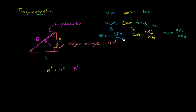You're probably asking, what is all this opposite, hypotenuse, adjacent? Well, let's take an angle here. Let's say this angle right over here is theta — between the side of length 4 and the side of length 5. So let's figure out what the sine of theta, the cosine of theta, and the tangent of theta are.